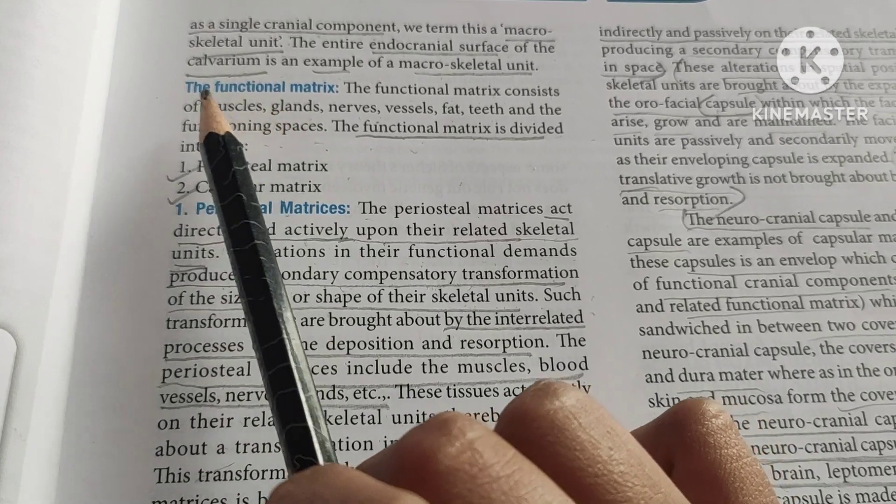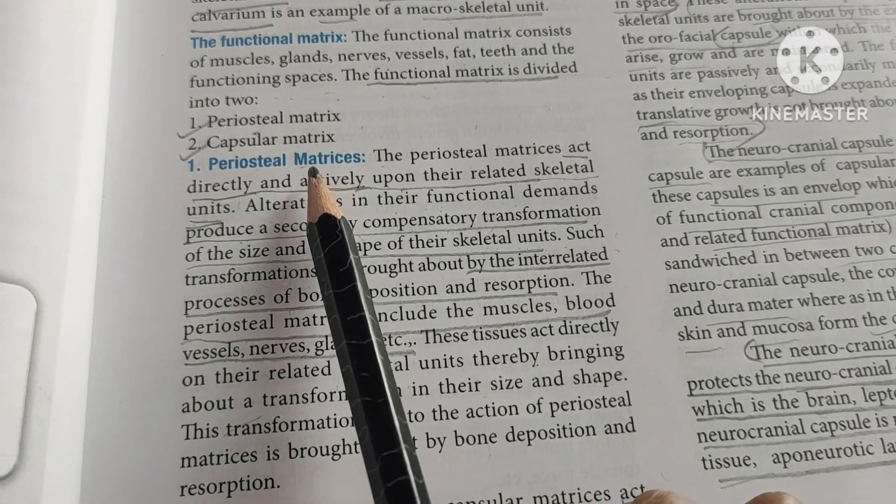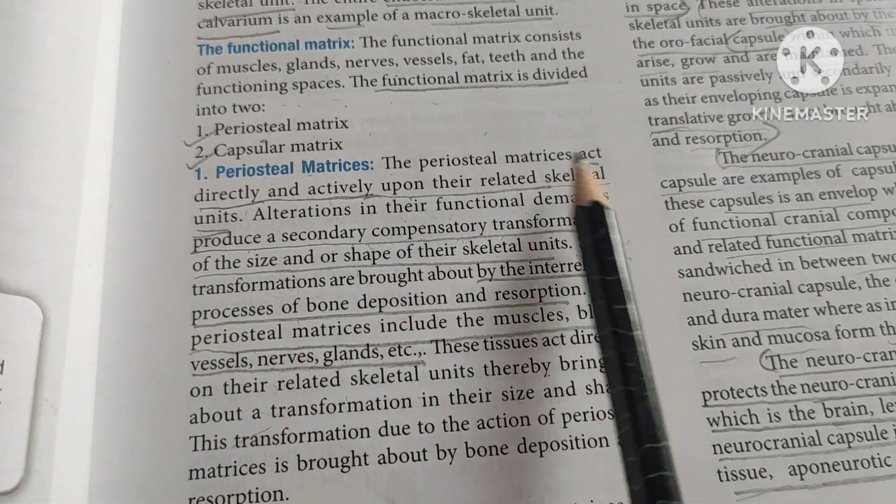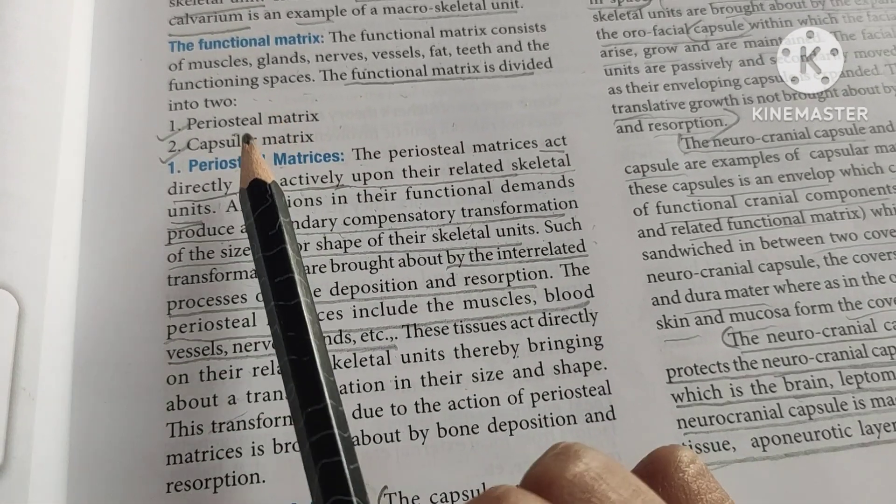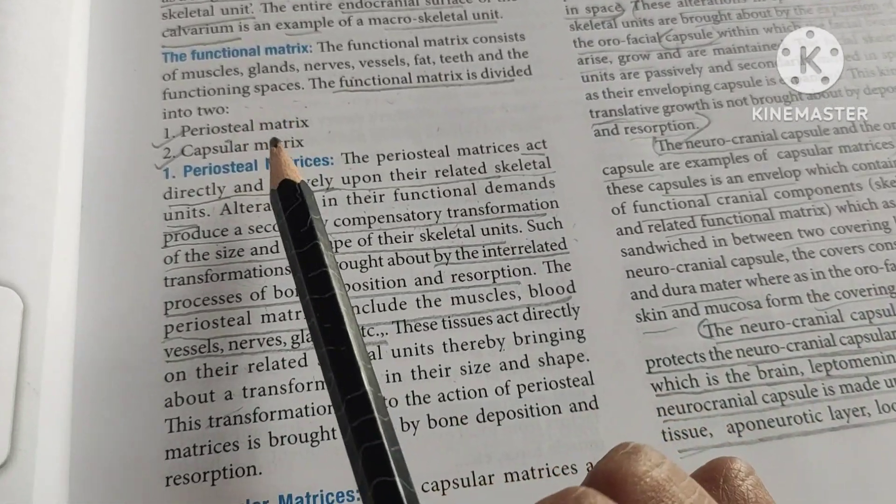The functional matrix is divided into the periosteal and the capsular matrix. The periosteal matrix acts directly, whereas the capsular matrix acts indirectly.